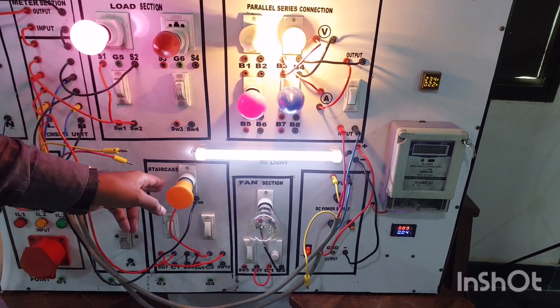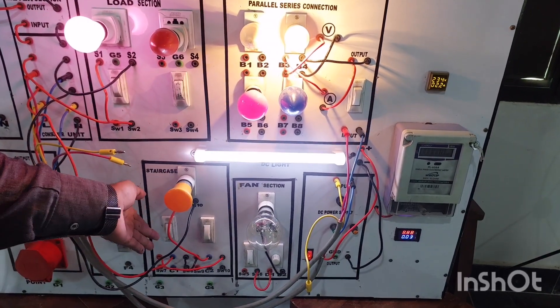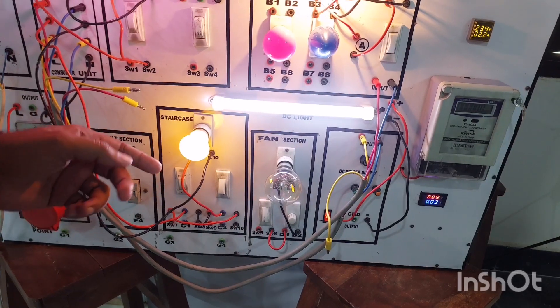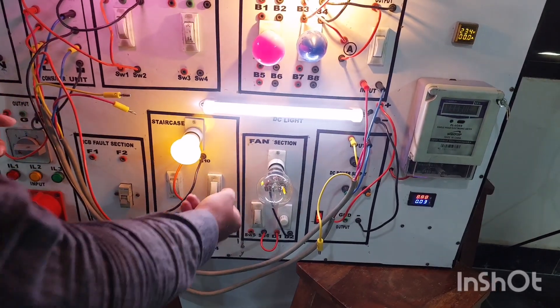This is our staircase section. If we are on the upper stairs, we can operate the light. When we are downstairs, we can operate the light from below.